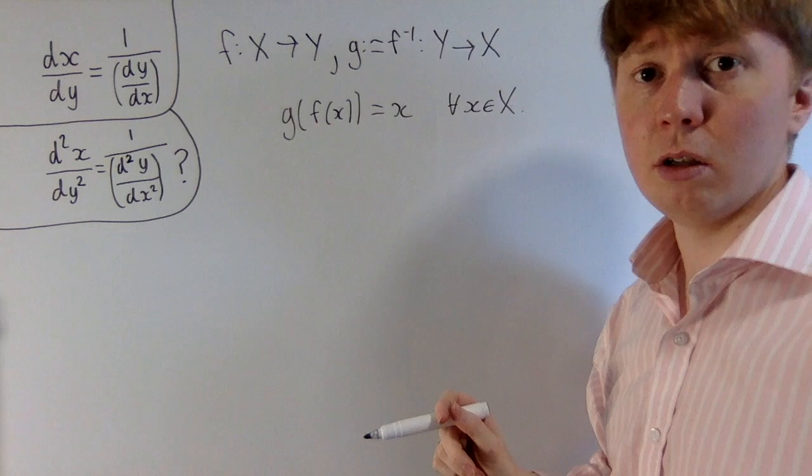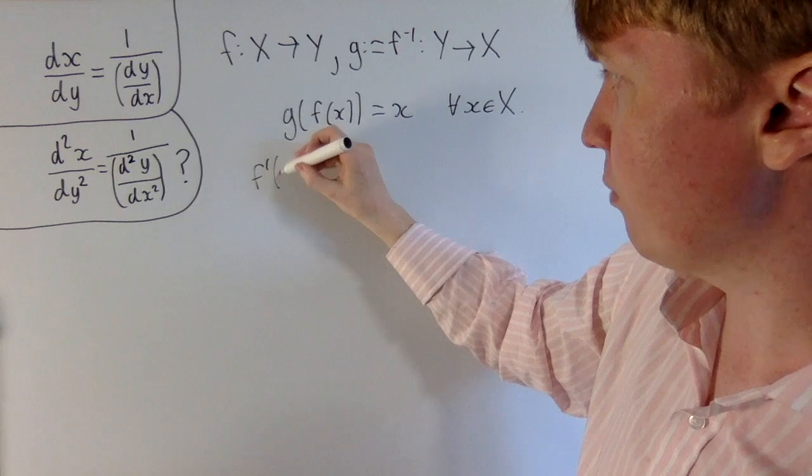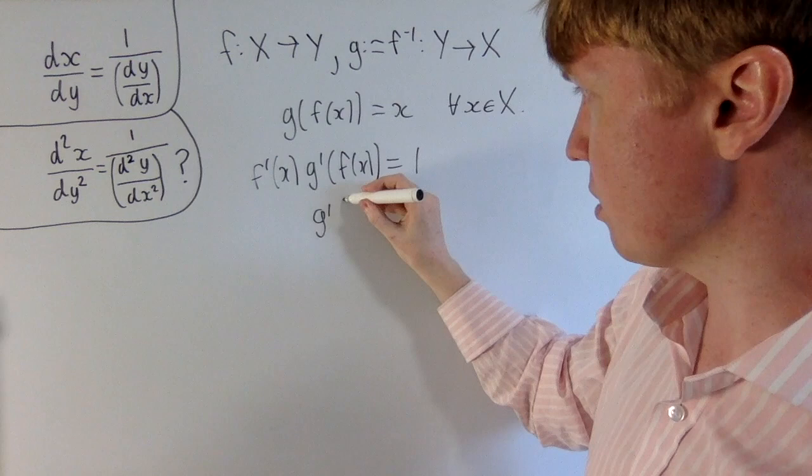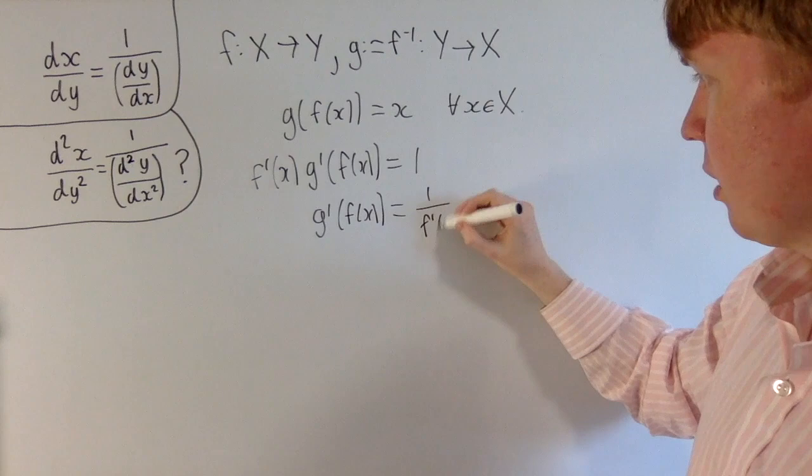To prove this result, we can just differentiate both sides. Using the chain rule, differentiating the left-hand side, we get f'(x) multiplied by g'(f(x)). This equals 1. If we rearrange to make g'(f(x)) the subject, because we're interested in g', we get g'(f(x)) = 1/f'(x).